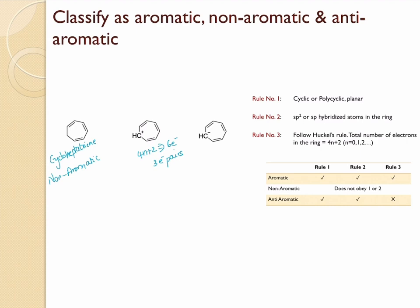For the corresponding anion of cycloheptatriene, there are two additional electrons compared to the cation, giving four electron pairs total. This falls under the 4n system, not 4n+2, so the cycloheptatrienyl anion is anti-aromatic.